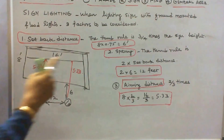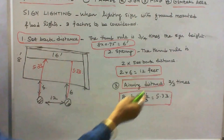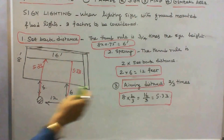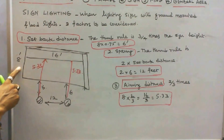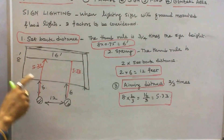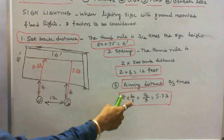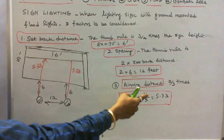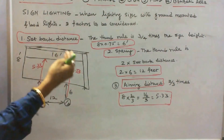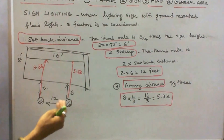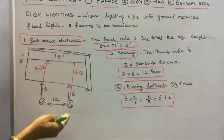Next is aiming distance. The aiming distance is 2/3 of the height of the sign board or advertisement board. The sign height is 8, so 8 times 2/3 equals 5.33 feet. To adjust the aiming distance, adjust the height of the projector accordingly.